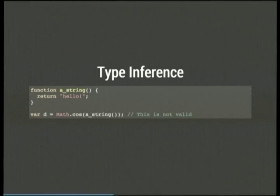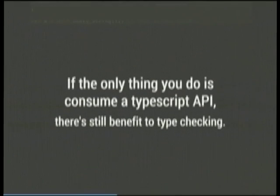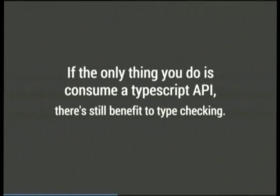Another thing that can be done in TypeScript is that if every return point of a function is of a given type, you get type checking for free on that function. So even if a function clearly returns a number without explicitly stating it, type inference can pick that up. If a function can only return a string and you pass it into something that expects a number, that won't work. Thanks to type inference, even if you don't annotate your own functions but just consume a type-hinted API, you will benefit from testing your code against constraints provided by third-party library developers.